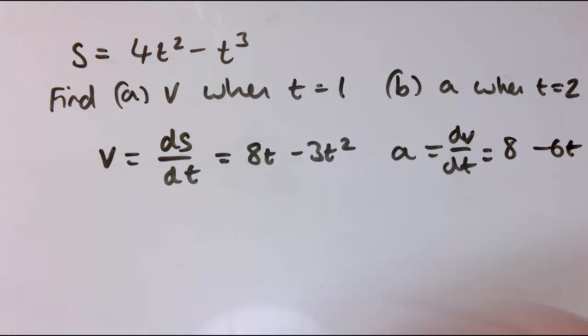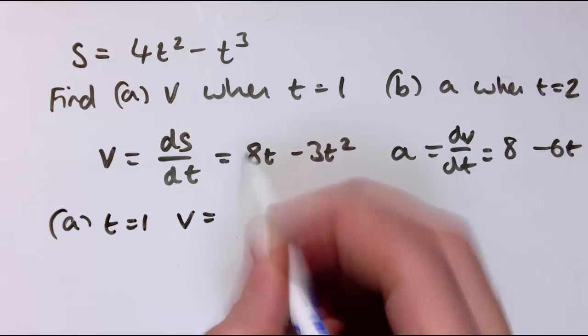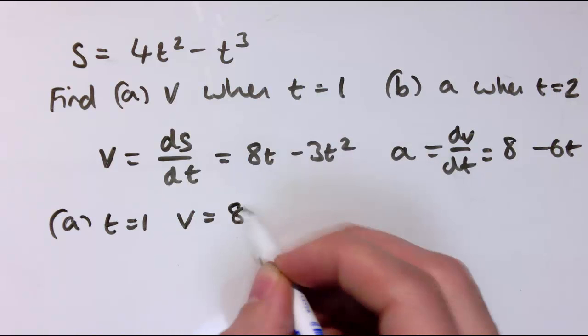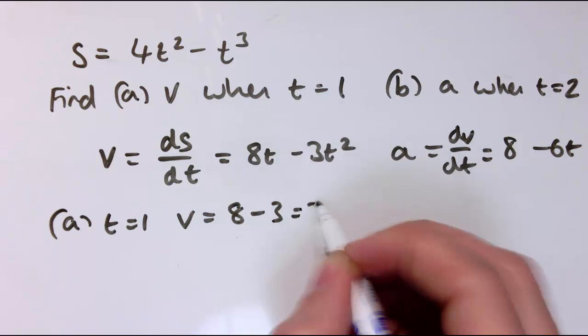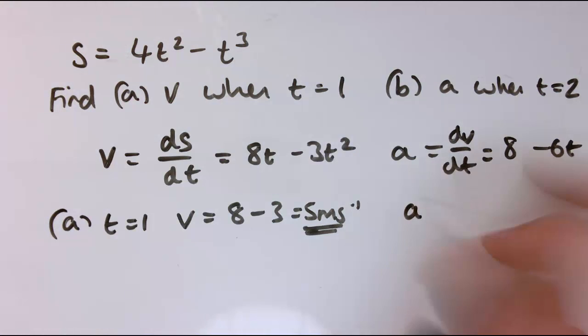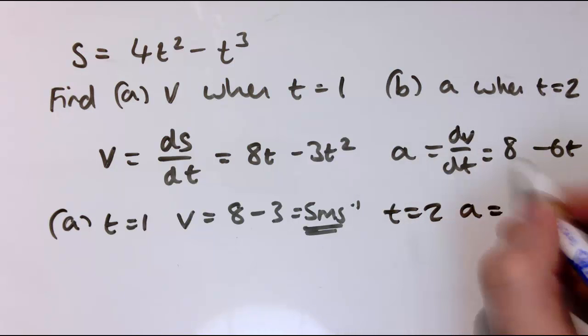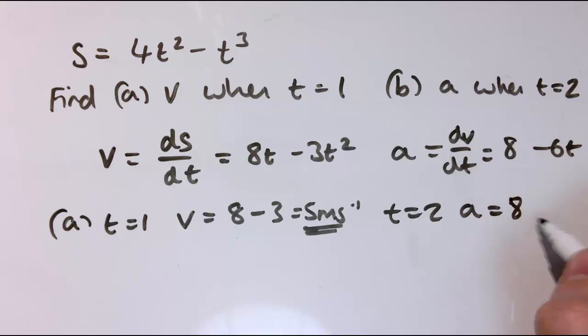So the answer to part a, when t equals 1, velocity is 8 times 1 minus 3 times 1 squared. So that's 5 meters per second. And when t equals 2, I've got the acceleration is 8 minus 6 times 2. So that's 8 minus 12, which is minus 4 meters per second squared.